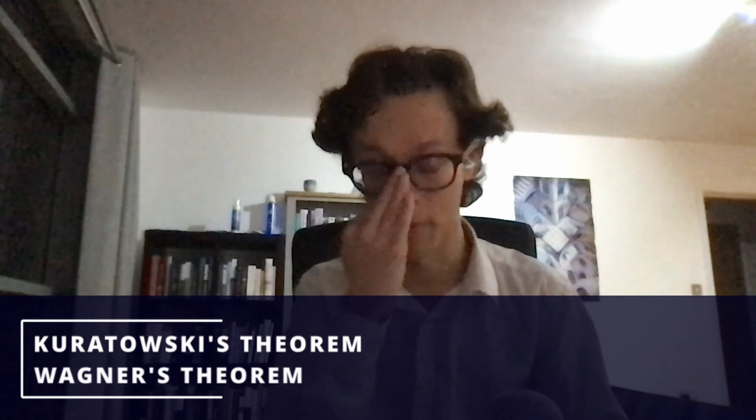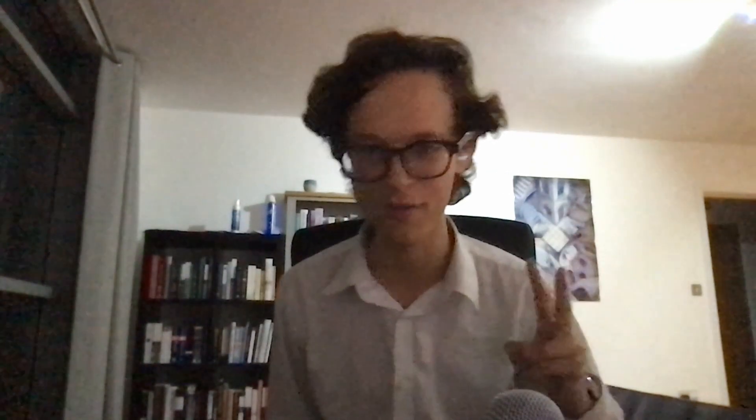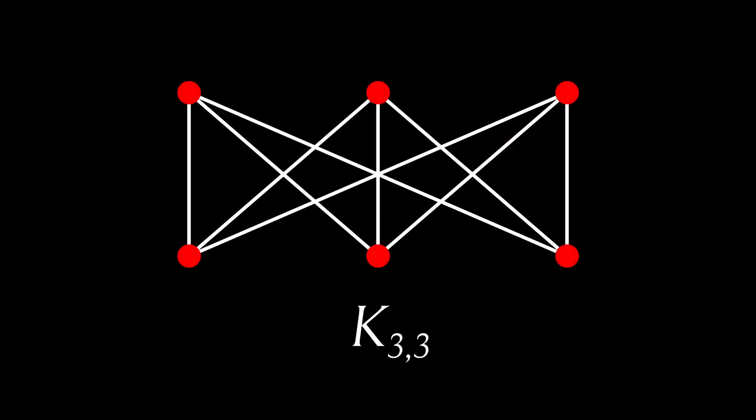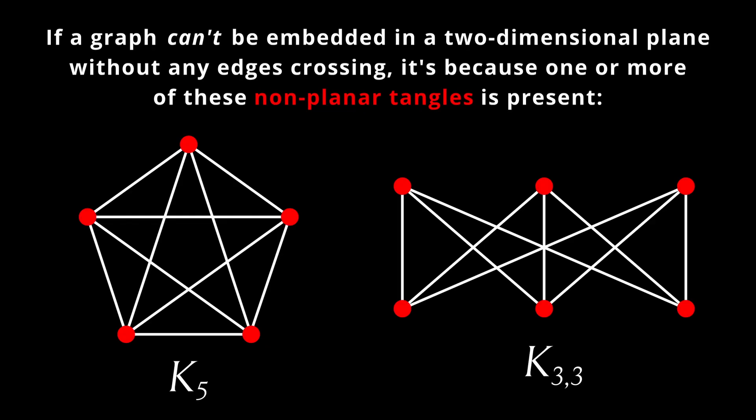It turns out there's a collection of theorems — specifically Kuratowski's theorem and Wagner's theorem in graph theory — that say if you have a non-planar graph, that non-planarity can be reduced to instances of one of two canonically non-planar graphs: K5, the complete graph on five vertices where every vertex is connected to every other vertex, and K33, the utility graph. Kuratowski's theorem states that every non-planar graph must have a subgraph that is a subdivision of either K5 or K33. Basically, non-planarity can always be ascribed to the presence of one or more instances of either K5 or K33 in your graph.